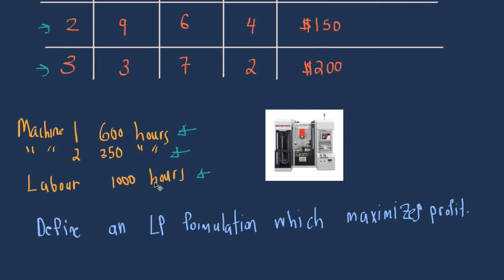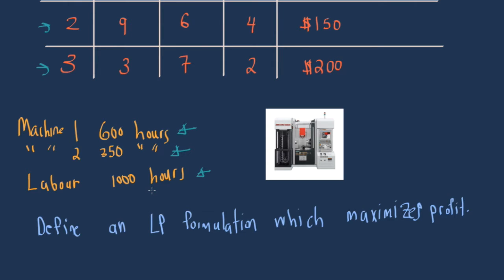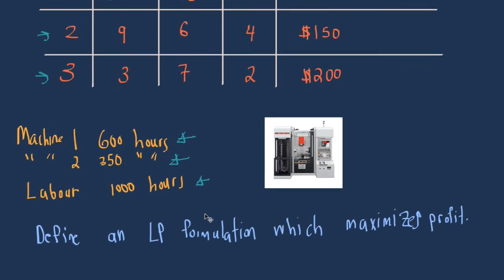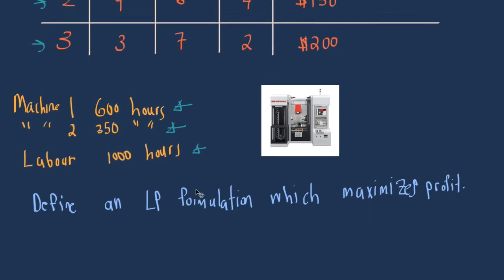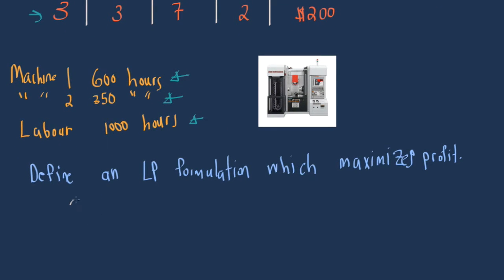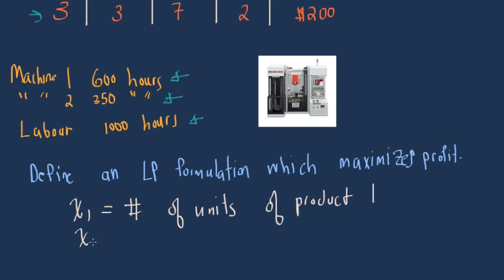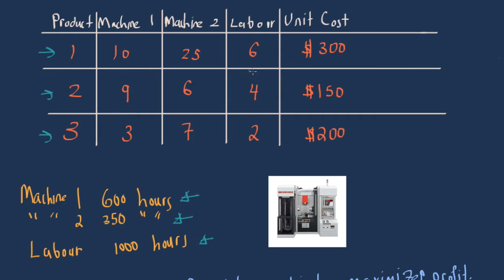Our question is to define a linear programming formulation that maximizes profit. The first step is to define our variables. Let x1 be the number of units of product one that you produce, x2 be the number of units of product two, and x3 be the number of units of product three.